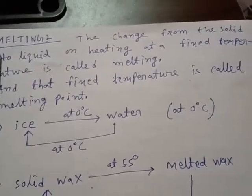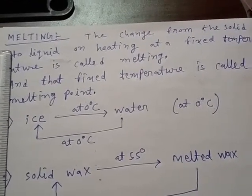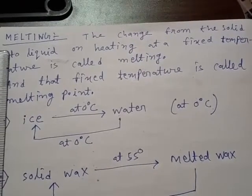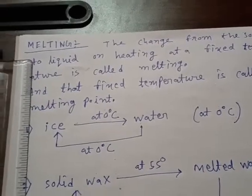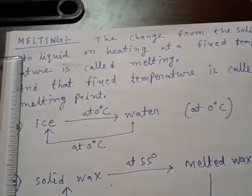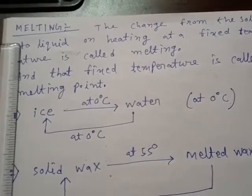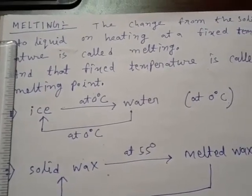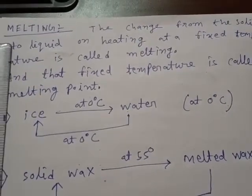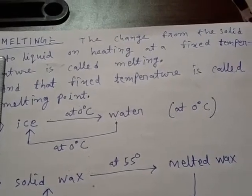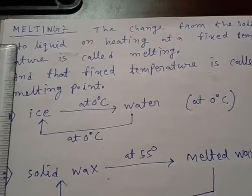What is melting? Melting is the change from solid to liquid on heating at a fixed temperature. That means when ice converts into water, that process is called melting. The fixed temperature at which the solid converts into liquid is called the melting point of that solid.